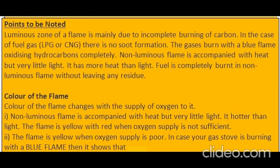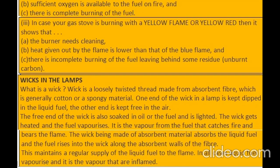Color of the flame changes with the supply of oxygen. The flame is yellow with red when oxygen supply is not sufficient, and yellow when oxygen supply is poor. If your gas stove burns with a blue flame, it shows: A. the burner is clean; B. sufficient oxygen is available; and C. there is complete burning of the fuel. If burning with a yellow or yellow-red flame, it shows: A. the burner needs cleaning; B. heat given out is lower than that of the blue flame; and C. there is incomplete burning leaving behind unburnt carbon.